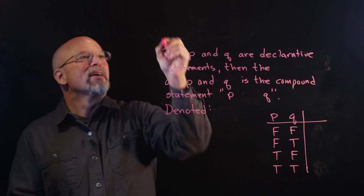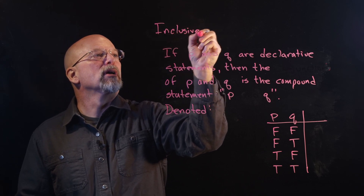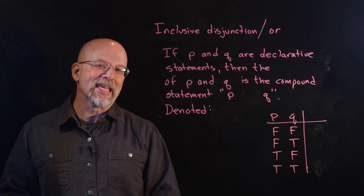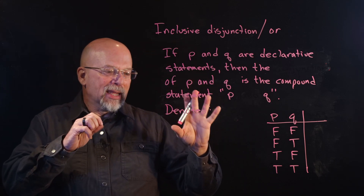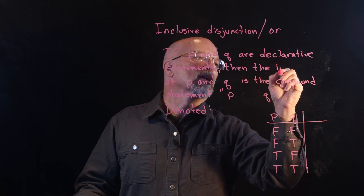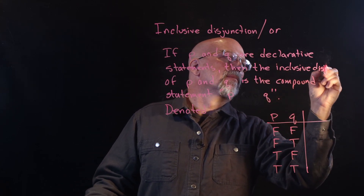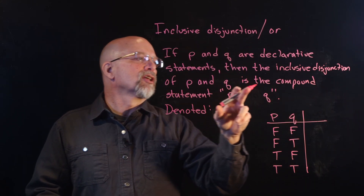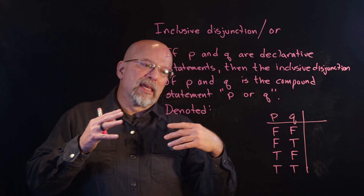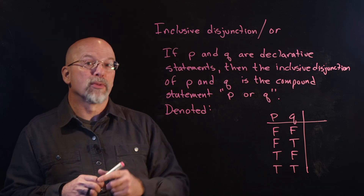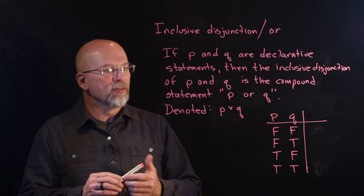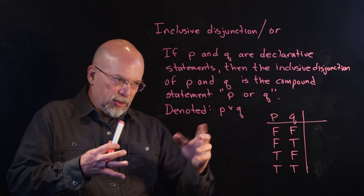Next is the inclusive disjunction — probably more familiar to you as the 'or.' What we've got here is this idea that either proposition can be true. If P and Q are declarative statements, then the inclusive disjunction of P and Q is the compound statement P or Q. In electronics, you may see the plus sign used to denote 'or,' but sticking with mathematical expressions, we use a small v (∨). That little v is read as 'or.'